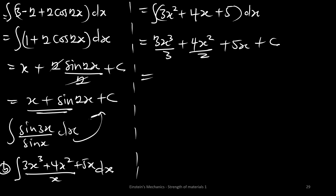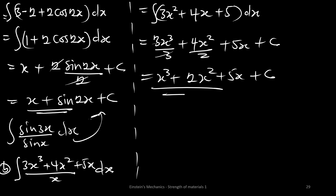Simplifying: 3/3 cancels to give x³, and 4/2 gives 2, so we have x³ + 2x² + 5x + C. This is the final answer for part (b). Always know your trig identities and apply them inside the trig function.